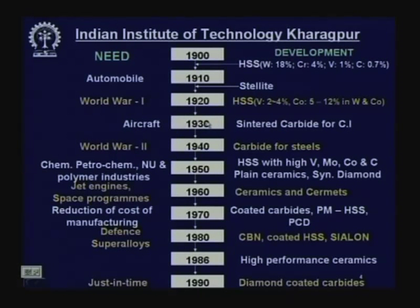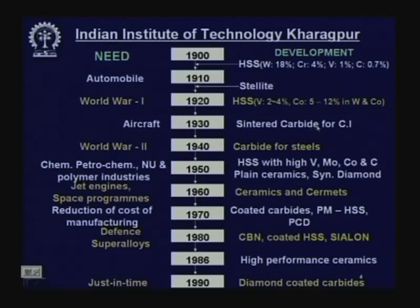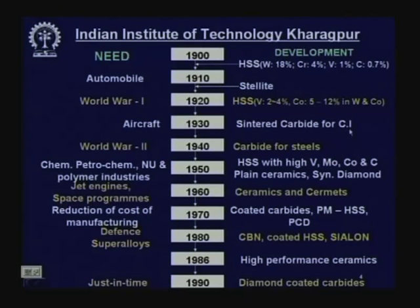Cemented carbide may have been developed simultaneously in Germany, the Soviet Union, and the USA. At that time it was confined to machining cast iron only. During the Second World War, around 1940, carbides suitable for machining steels were developed.